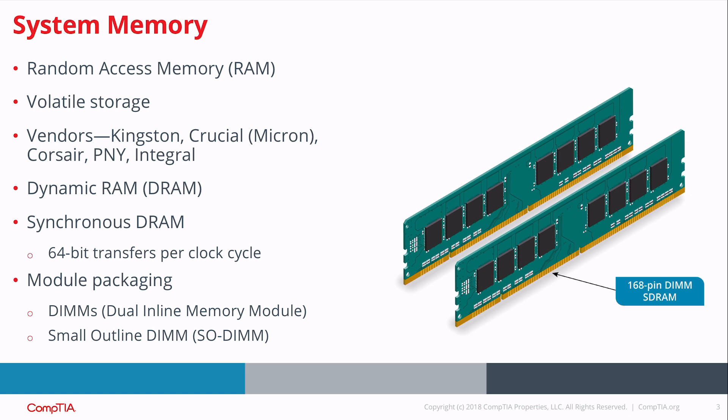System memory is in fact volatile — if the power goes out, you lose everything saved in that storage medium. If you're in the middle of a project and lose power, you'll have to restart when the computer comes back on. Some of the most common memory vendors are Kingston, Crucial, Corsair, and PNY.